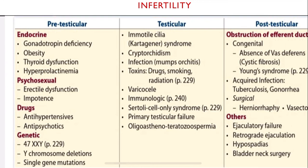To summarize pretesticular causes: endocrine includes gonadotrophin deficiency, thyroid dysfunction, hyperprolactinemia, and obesity. Psychosexual includes erectile dysfunction and impotence. Drugs: anti-hypertensive and anti-psychotic drugs. Genetic: Klinefelter syndrome (47XXY), Y chromosome deletion, and single gene mutation.